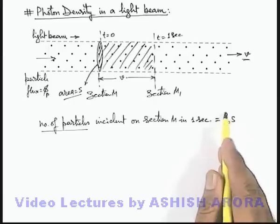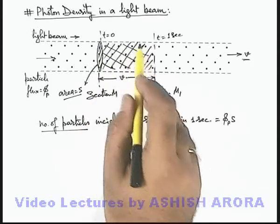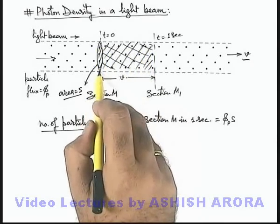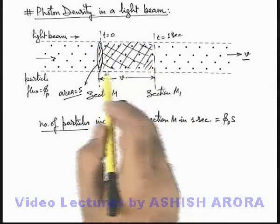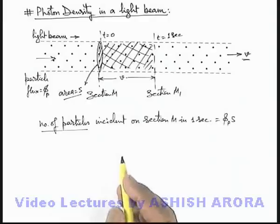So in this situation, all these particles are located in this region, because in 1 second all those particles which have incident onto it are right now located in this region of length v. So in this situation we can write density of